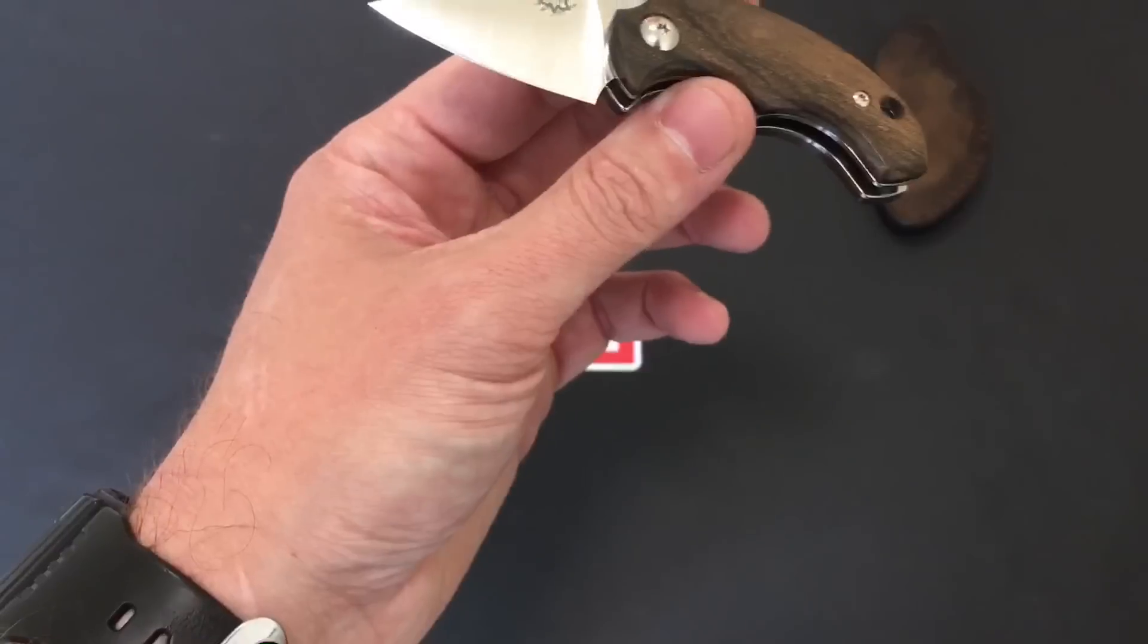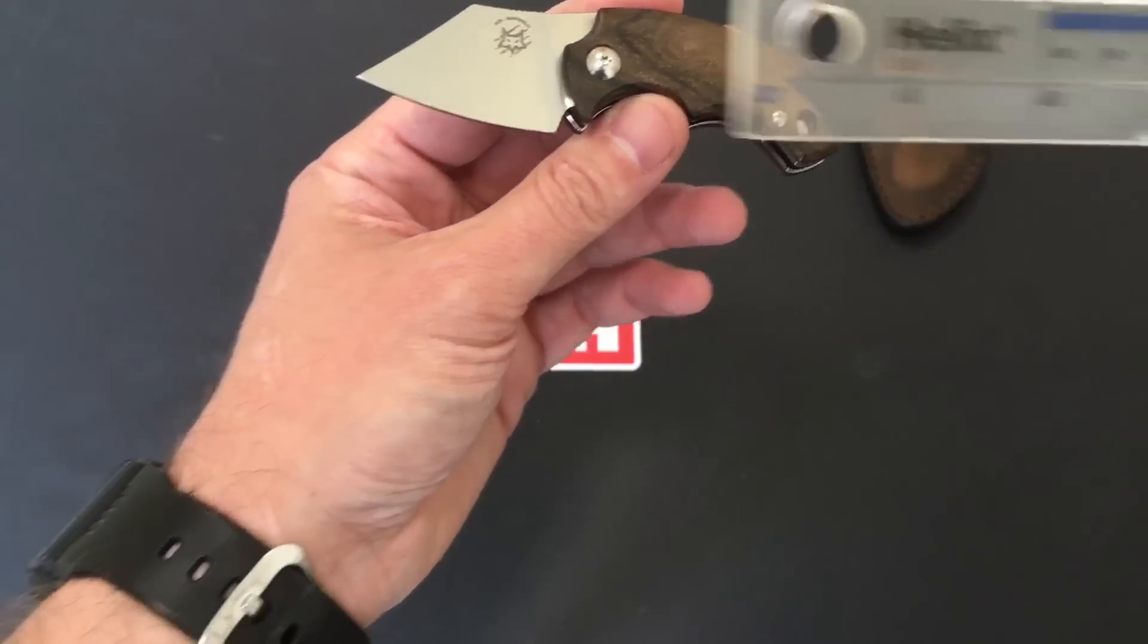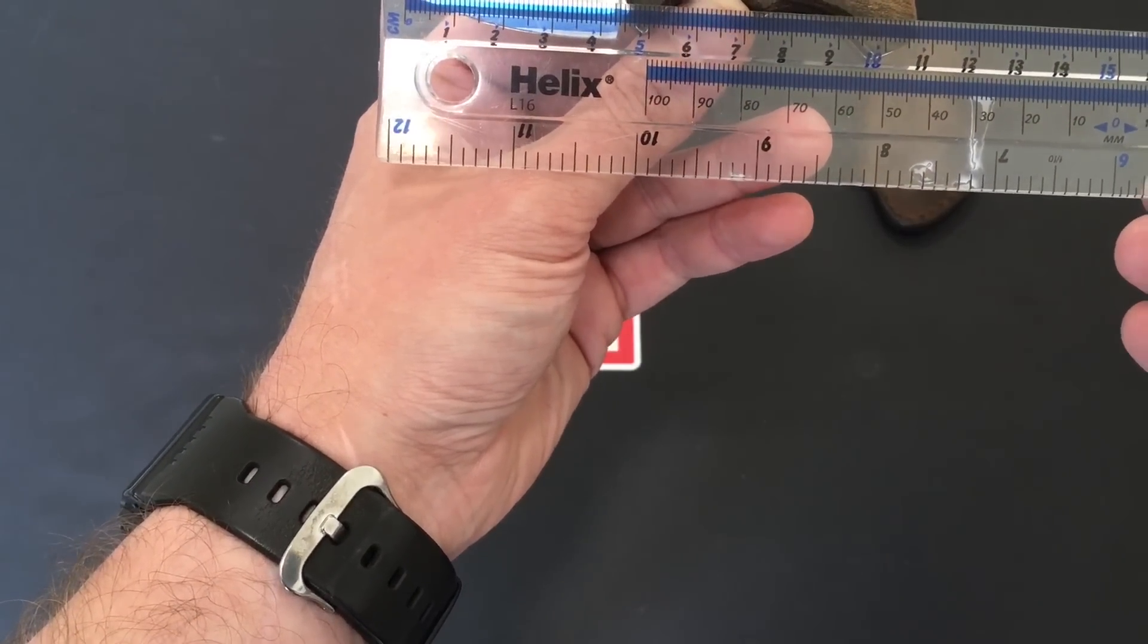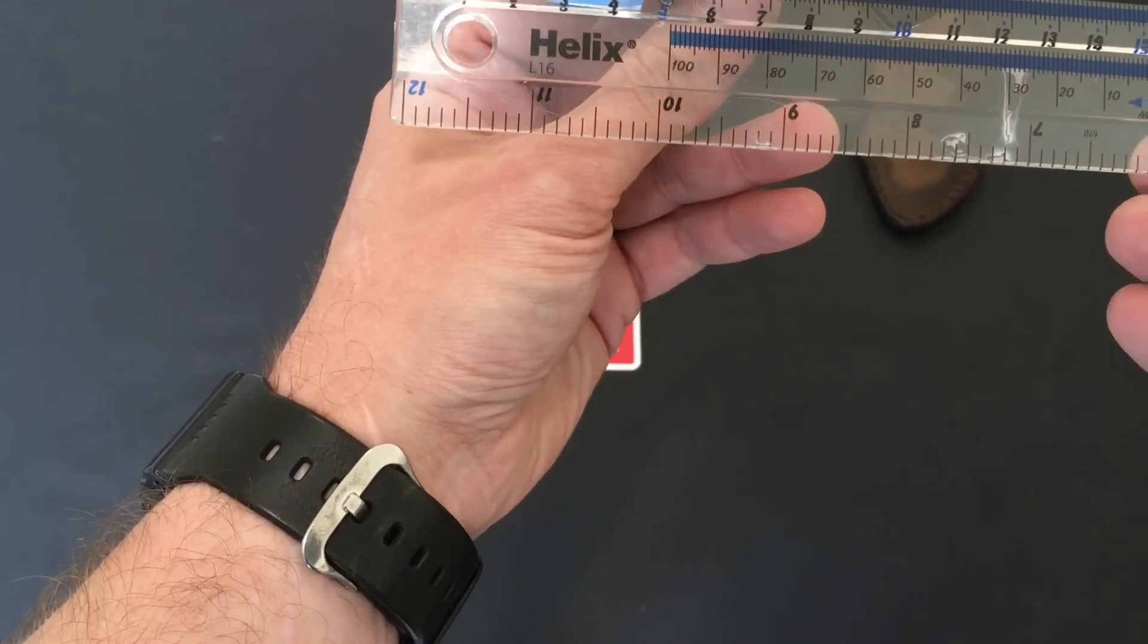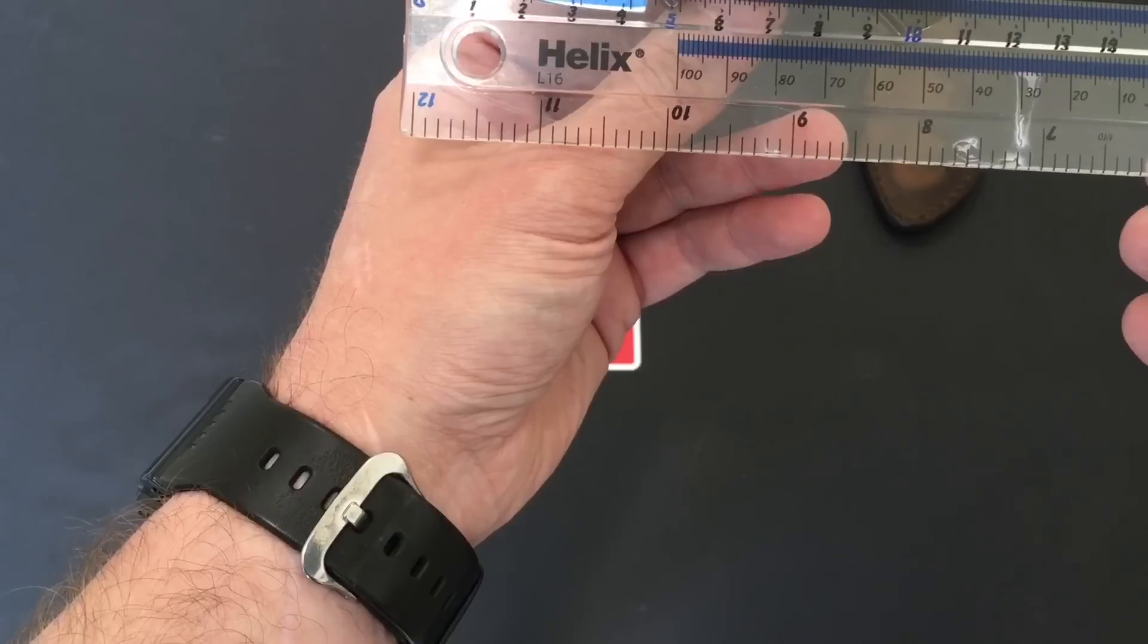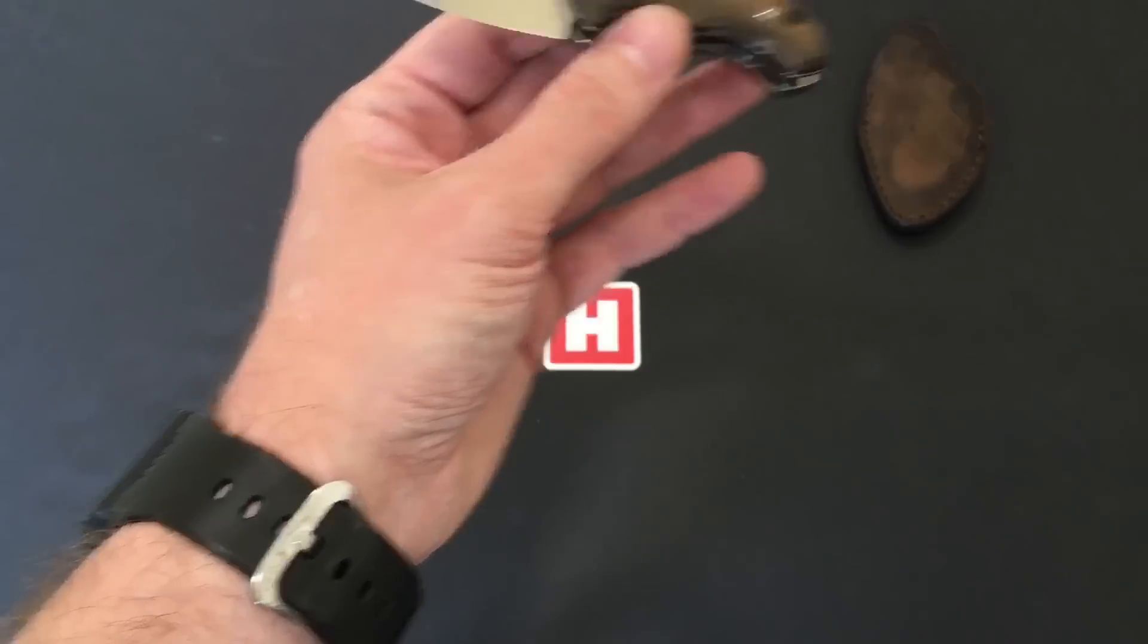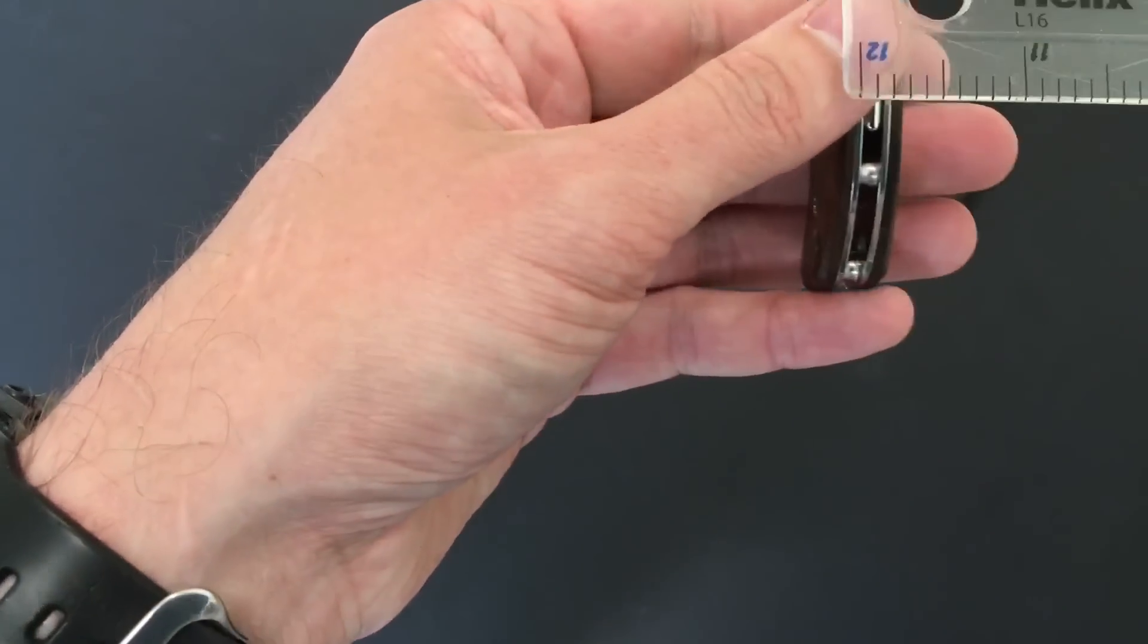But if we go through the specs, when he's folded open, we're looking at from tip to tip, 10.6 centimeters. And we've got a blade length of 4.2 centimeters on the back spine.